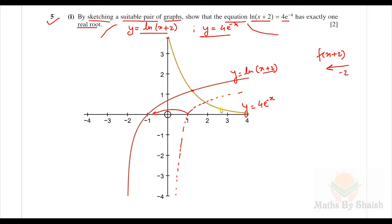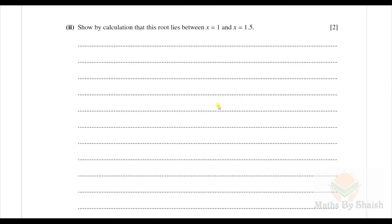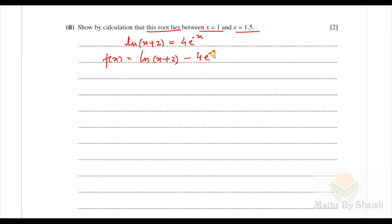Let's do the next part: show by calculation that this root lies between x = 1 and x = 1.5. Since we have ln(x+2) = 4e^(-x), we make the function f(x) = ln(x+2) - 4e^(-x). If this function has one sign at x = 1 and the opposite sign at x = 1.5, then the root lies between them. So let's calculate f(1) = ln(1+2) - 4e^(-1) = 3 - 4e^(-1).